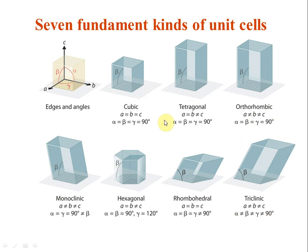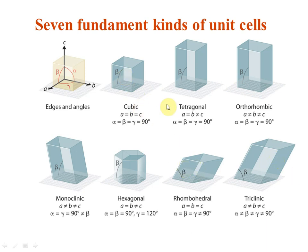You are expected to remember all seven crystal systems, though questions rarely come straight from them. At minimum, remember cubic, tetragonal, and orthorhombic — all have 90-degree angles with decreasing equality of sides. Also remember triclinic where none of the sides or angles are equal, and rhombohedral which is like a cube but with angles not equal to 90 degrees. These groupings help you remember five of the seven systems easily.